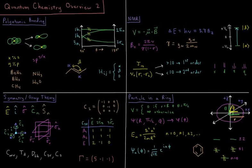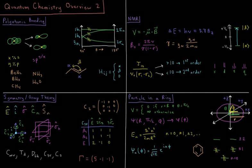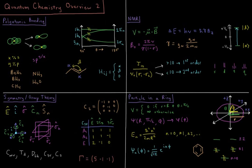This video is an overview of the four final chapters of the Quantum Chemistry Playlist. So picking up after the end of the diatomic molecules chapter, we have polyatomic bonding.